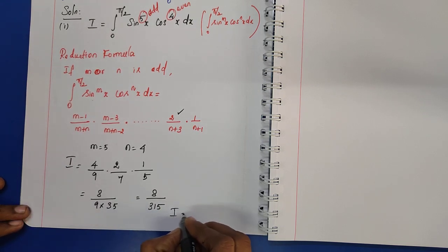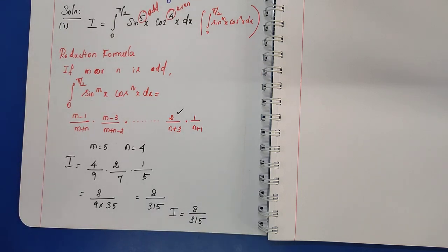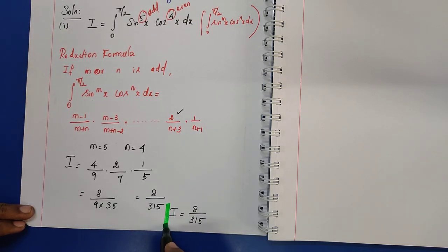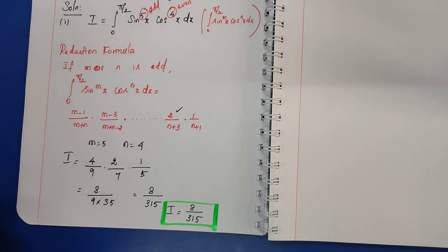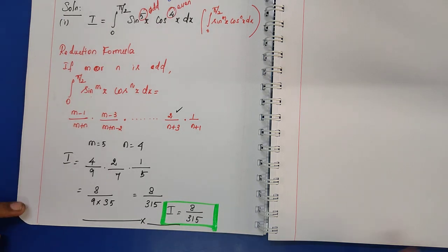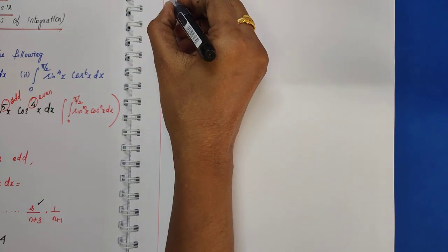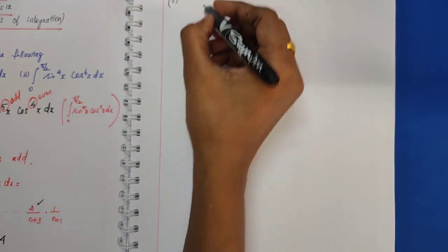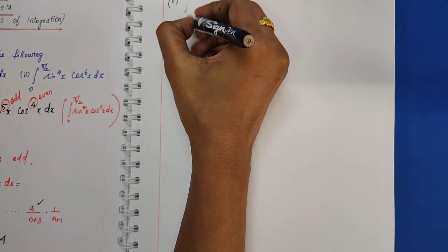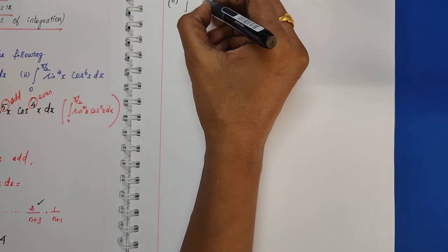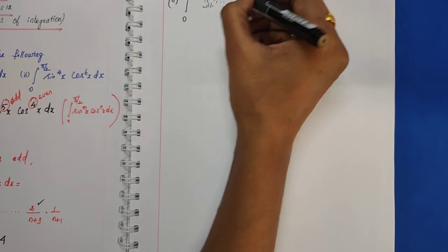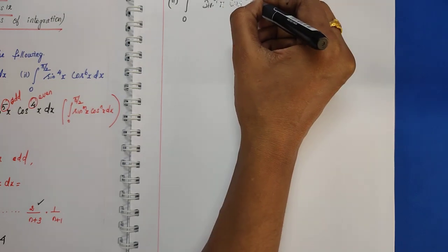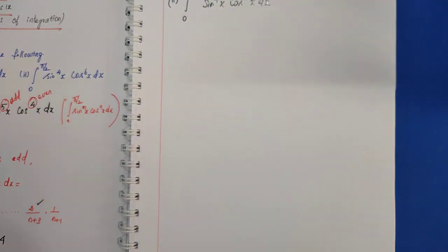Therefore I is equal to 8/315. This is the answer for Division number 1. Division number 1 is over. Now Division number 2: the question is integral from 0 to π/2 of sin⁴x·cos⁶x dx.